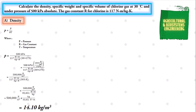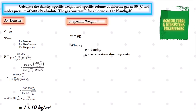Next, we solve for the specific weight. The formula is: specific weight equals the product of density and acceleration due to gravity. We already solved for the density value, and the acceleration due to gravity is 9.81 meters per second squared. Substituting: specific weight equals 14.10 kg/m³ multiplied by 9.81 m/s².